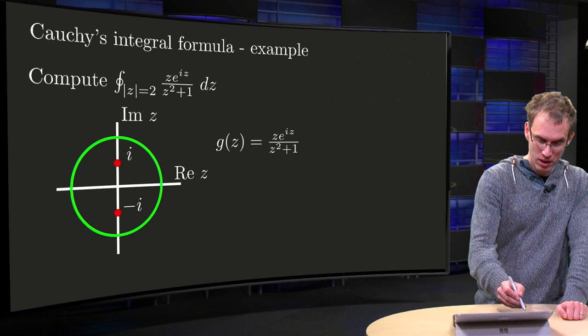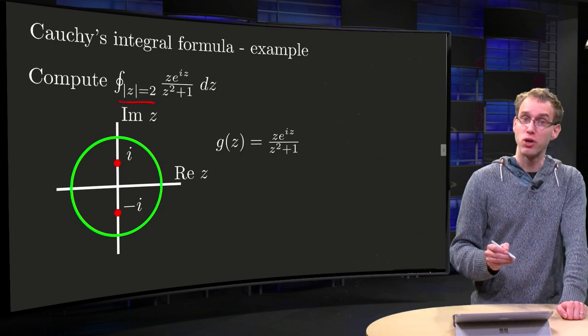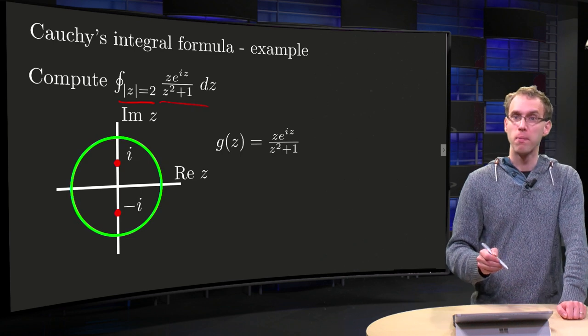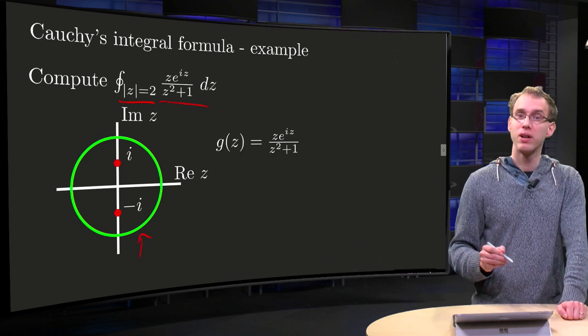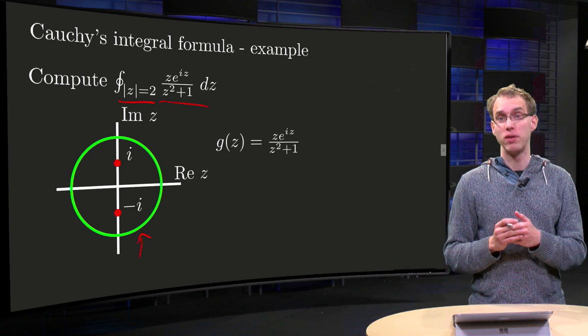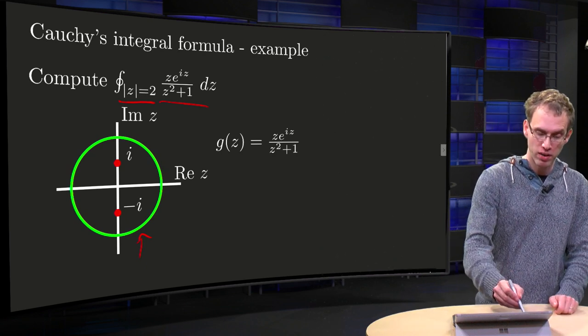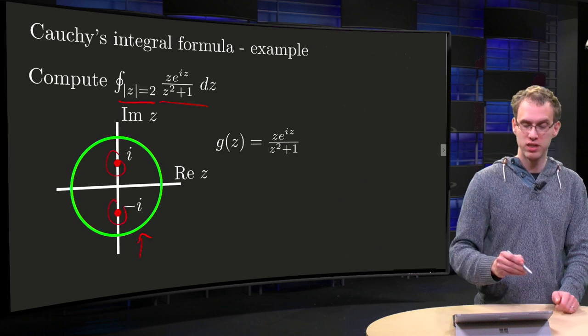We want to compute the integral along the circle of radius 2, |z| equals 2, of this function over here. So here we have our contour, and you see z squared plus 1 equals 0 if z equals i and minus i, so we have two singularities inside.